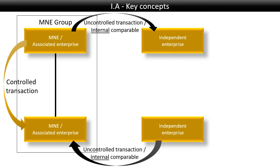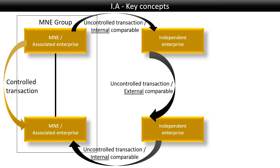Likewise, if the independent enterprise sells to the bottom associated enterprise, then this would be an uncontrolled transaction because you cannot influence the sales price set by the independent enterprise — and it will be another internal comparable. Now, if our two independent enterprises were to sell to each other, that would be an external comparable, because in both cases the buyer and the seller are external to the group.